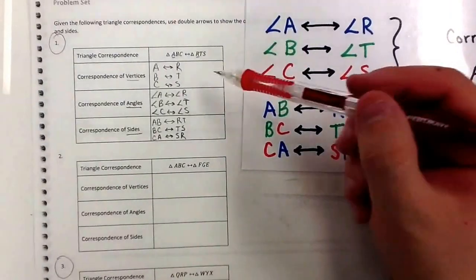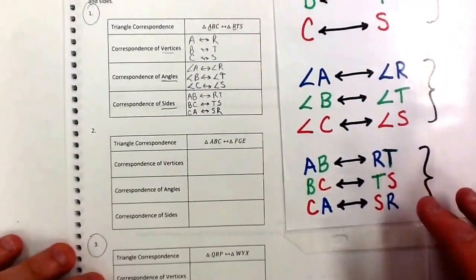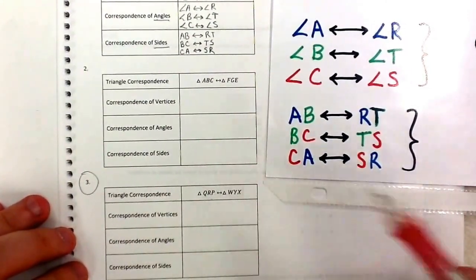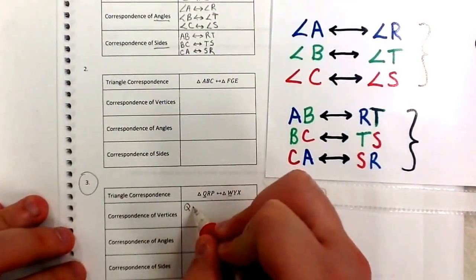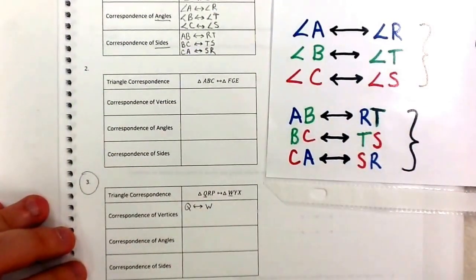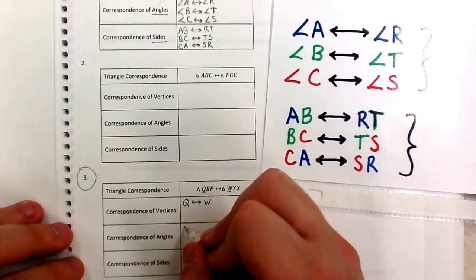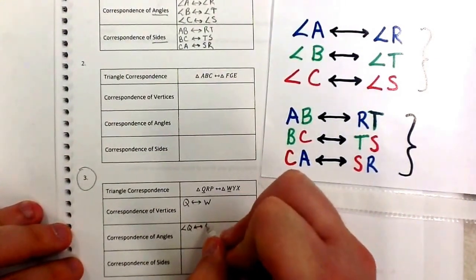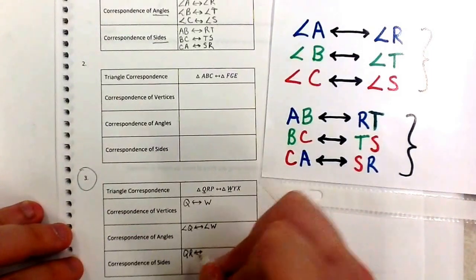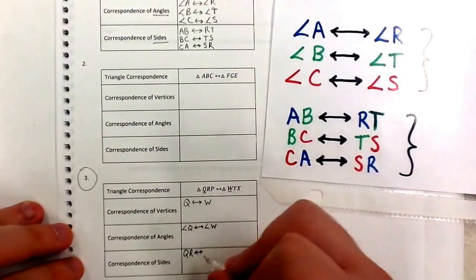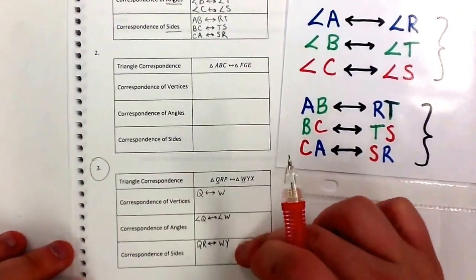Number 3 is the exact same thing as number 1 — they give you the triangle but you're using different letters. I'll get you started: the first correspondence of vertices is Q corresponds to W. You take it from there — three things in each box for vertices, angles, and sides. Correspondence of angles would be angle Q corresponds to angle W. For sides, QR corresponds to WY, and so on.